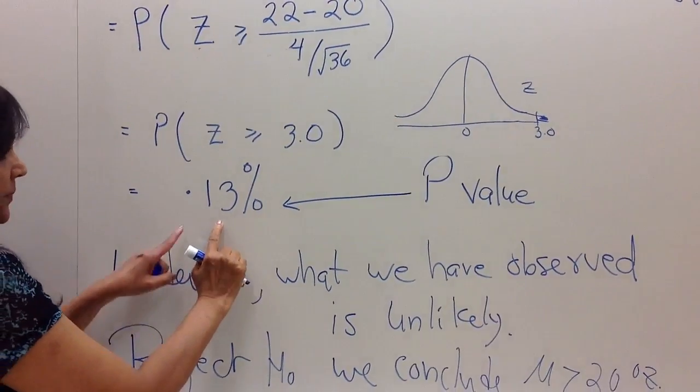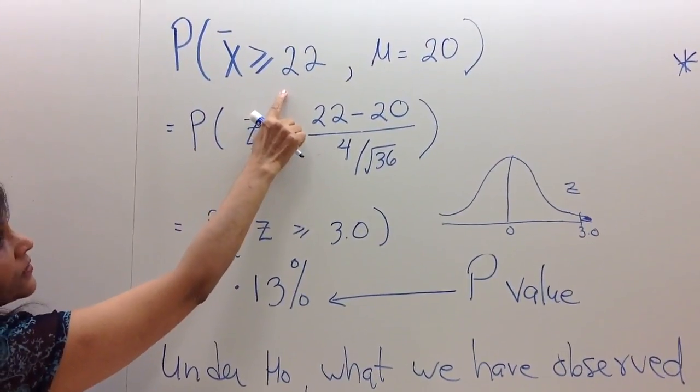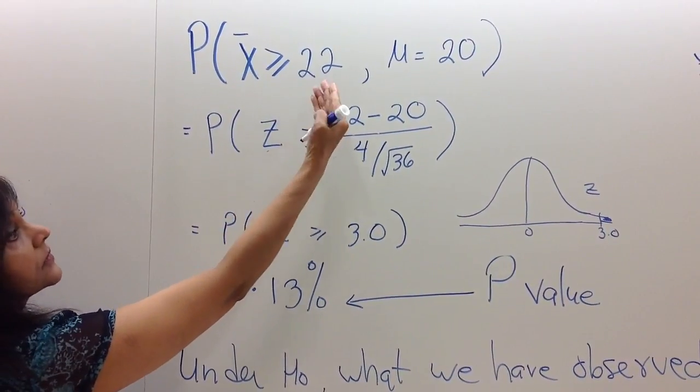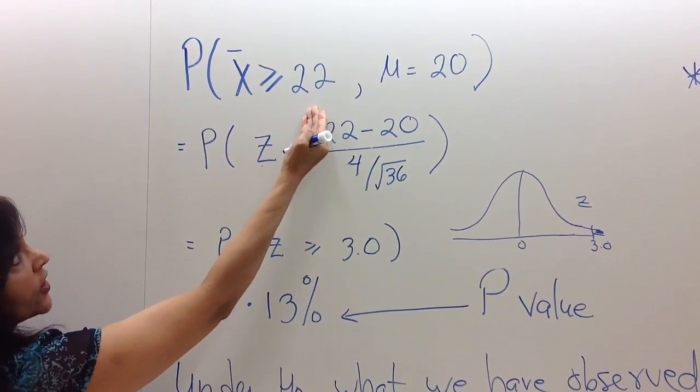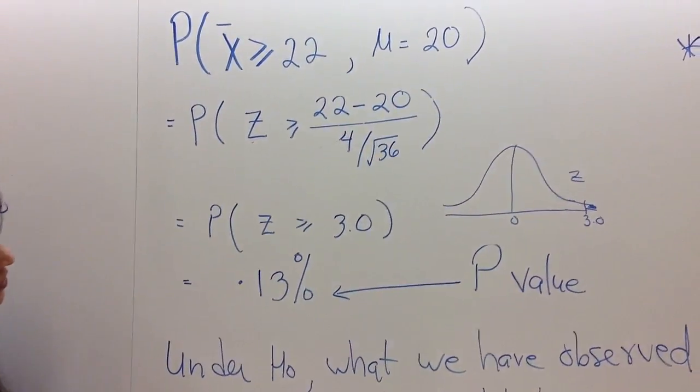So what is again, what is the p-value? P-value is the probability of observing a result as high as or higher than what we have observed if the null hypothesis is true.